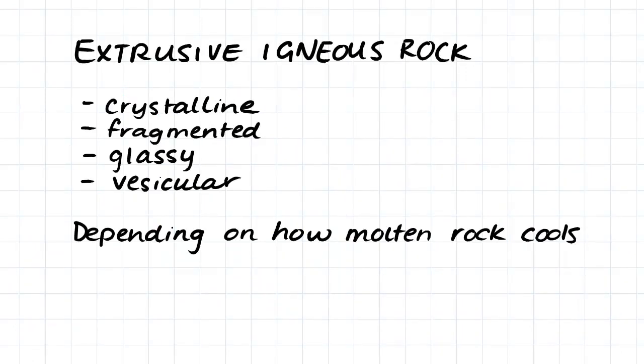Extrusive igneous rock can take a few forms, including crystalline, fragmented, glassy, and vesicular.